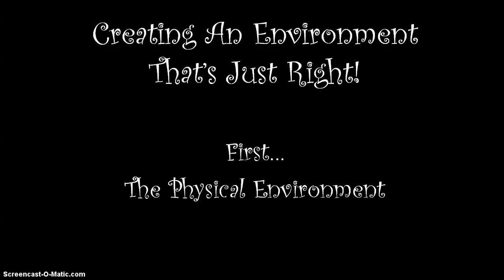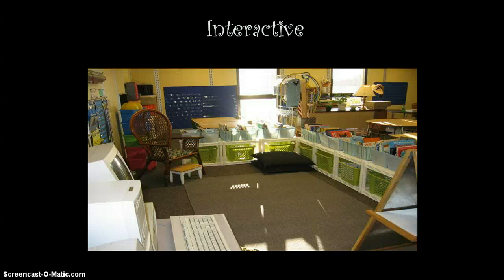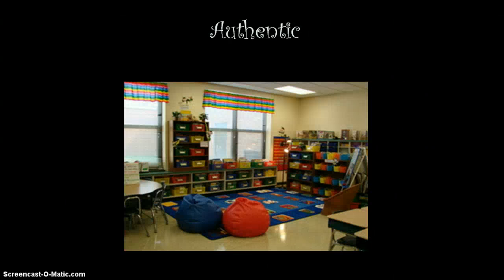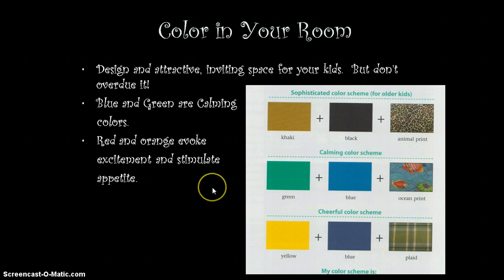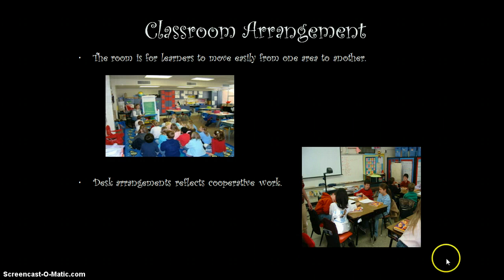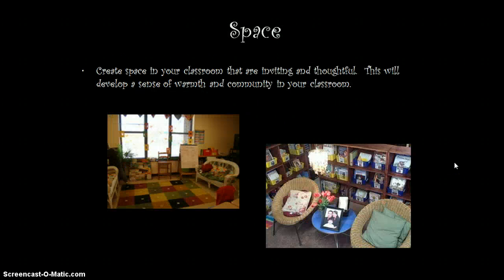The first is the physical environment. It needs to be interactive, engaging, and authentic. The colors of your room need to blend together — make sure they're not too overwhelming but just fit right in. Remember that blue and green are calming colors, and red and orange evoke excitement and stimulate appetite. Make sure your classroom arrangement is easy for kids to move from one area to the other and that your arrangement reflects cooperative work. Your space should be inviting and thoughtful, developing a sense of warmth and community in your classroom.